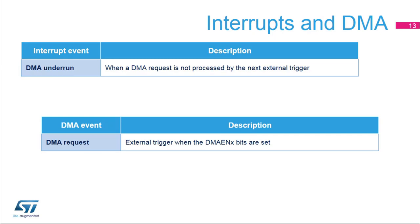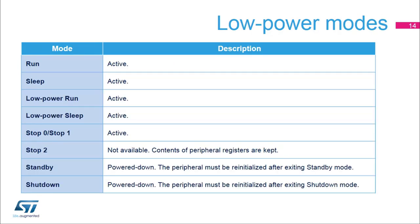The DAC can generate a DMA underrun interrupt. To transfer data from memory, a DMA request can be generated. The digital-to-analog converter is active in the following low-power modes: Run, Sleep, Low-power Run, Low-power Sleep, Stop 0, and Stop 1. In Stop 2 mode, the DAC is not available, but the content of its registers is kept.